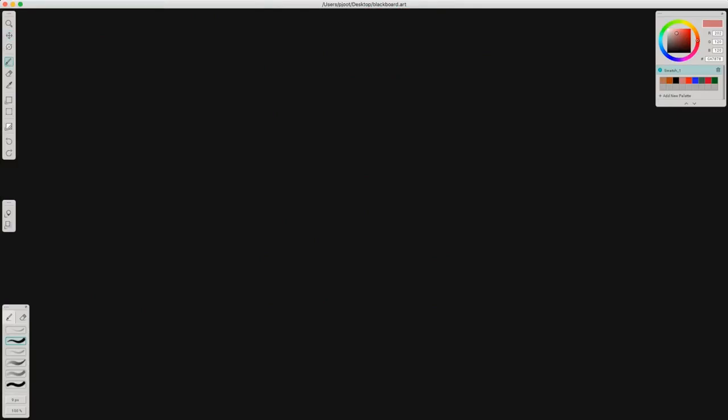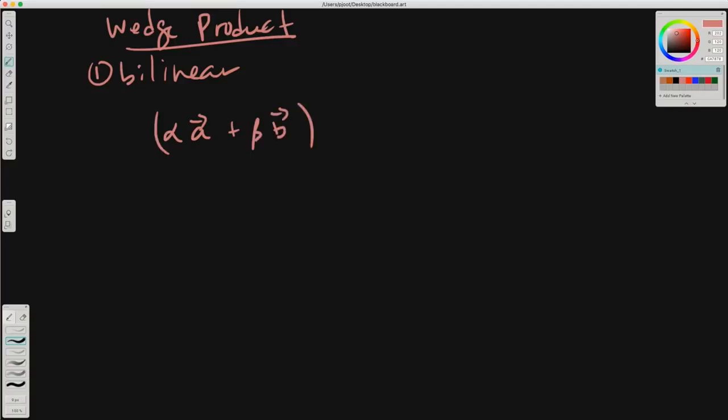The wedge product has a couple properties. One is it's a bilinear operator. For example, if we take the wedge of a linear combination, alpha A plus beta B, and wedge this with some other vector C, then we get alpha A wedge C plus beta B wedge C.